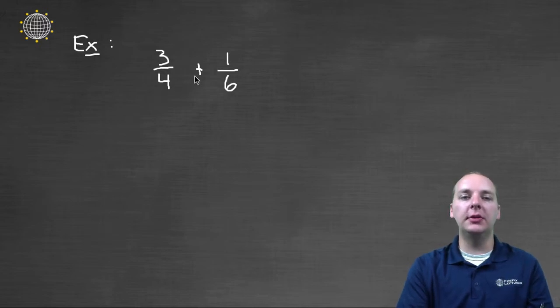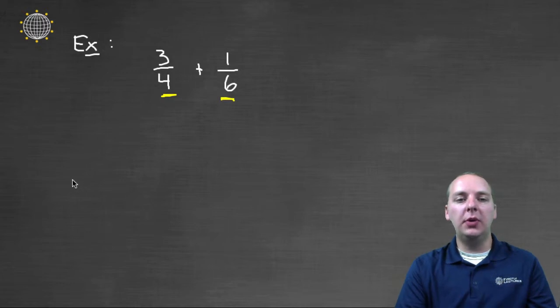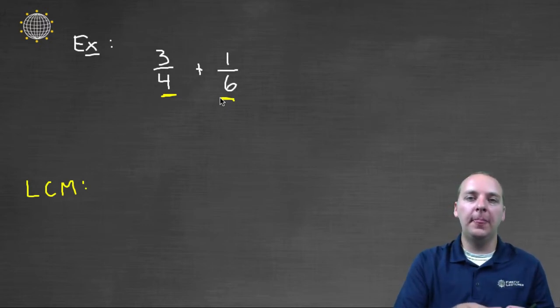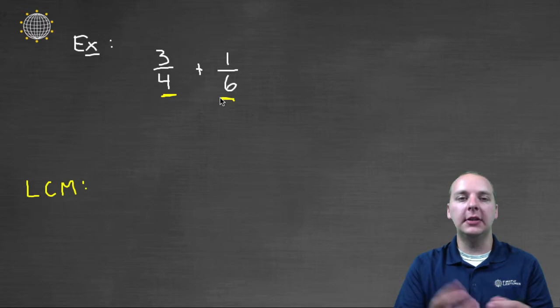Let's say we had three-fourths plus one-sixth. Well right now we can't add these because the denominators don't agree with one another. So what we need is the least common multiple of these denominators four and six. So first of all, what is a least common multiple?